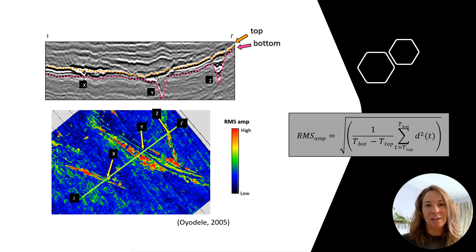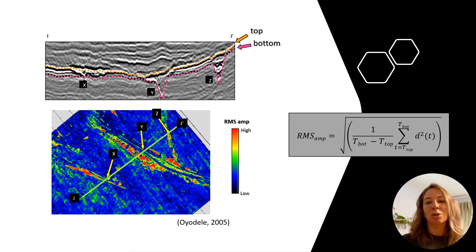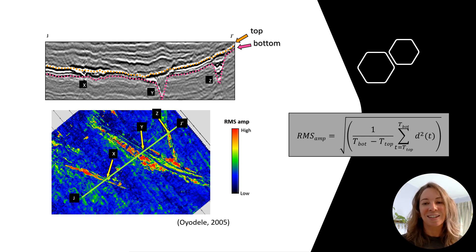As a basic concept, RMS amplitude is the root mean square of seismic data within a specific time window. You can think of it as measuring the average strength of the seismic signal, but with a mathematical twist that makes it particularly useful for geoscientists.